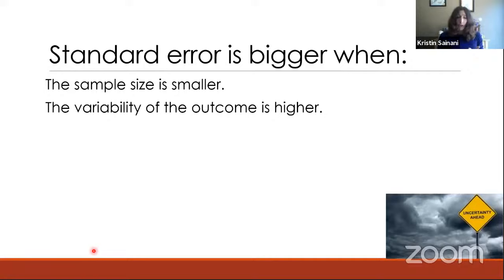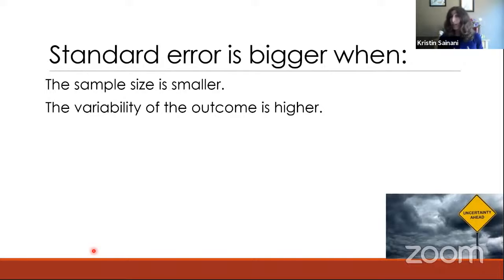Standard error is a measure of the variability of our sample statistic — how much the statistic bounces around if we could somehow repeat our experiment many times. Standard error depends on two components: sample size and the variability of the outcome. When sample size is smaller or when variability is higher, those two things drive a bigger standard error, reflecting more fluctuation and more uncertainty in our sample statistic.